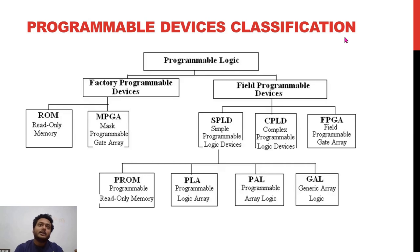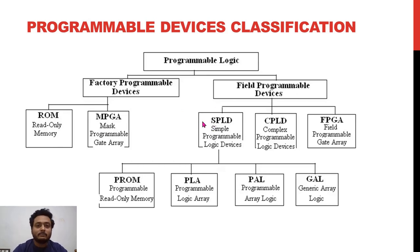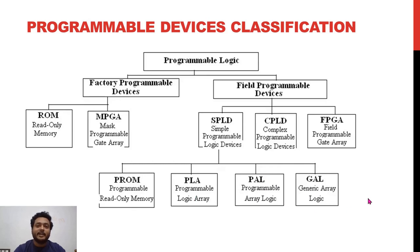Let's come to the actual topic: programmable device classification. We have two categories: factory-programmable devices and field-programmable devices. Factory-programmable devices include ROM and MPGA (mask-programmable gate array) — once programmed, we cannot change them. Field-programmable devices are classified as SPLD, CPLD, and FPGA. SPLD includes PROM, PLA, PAL, and GAL.